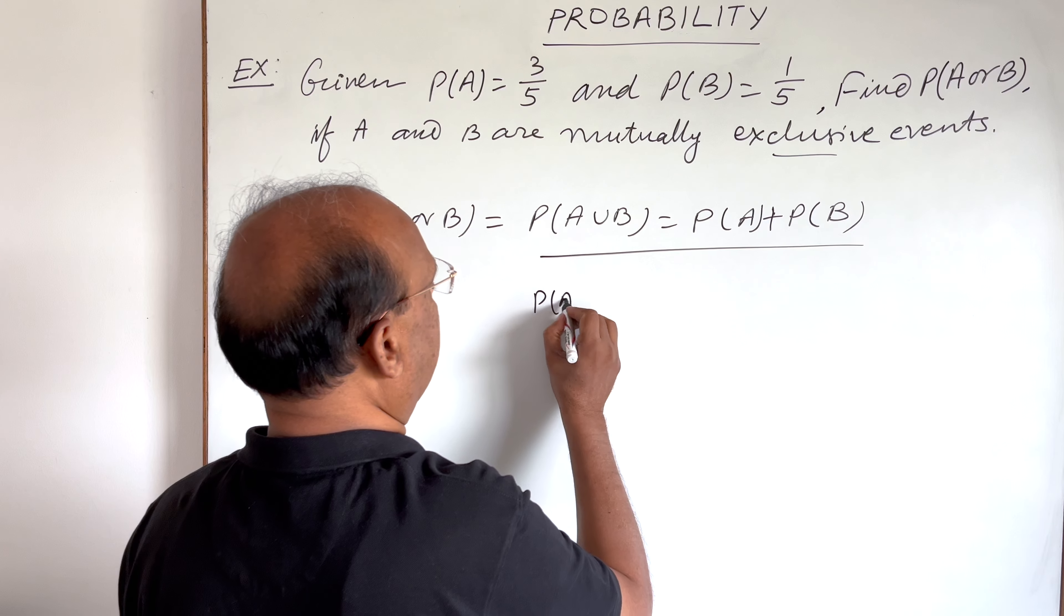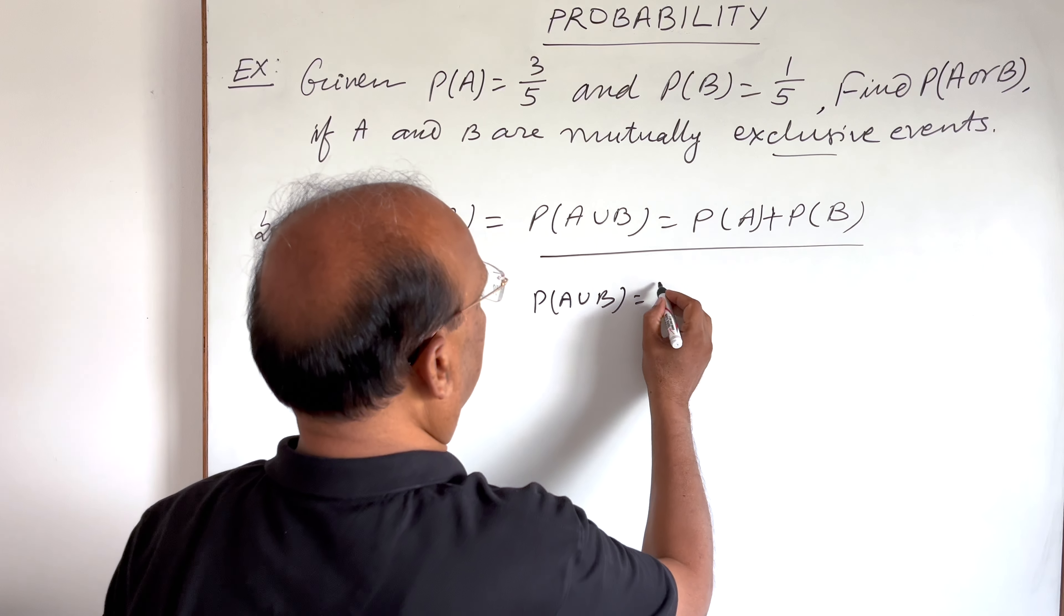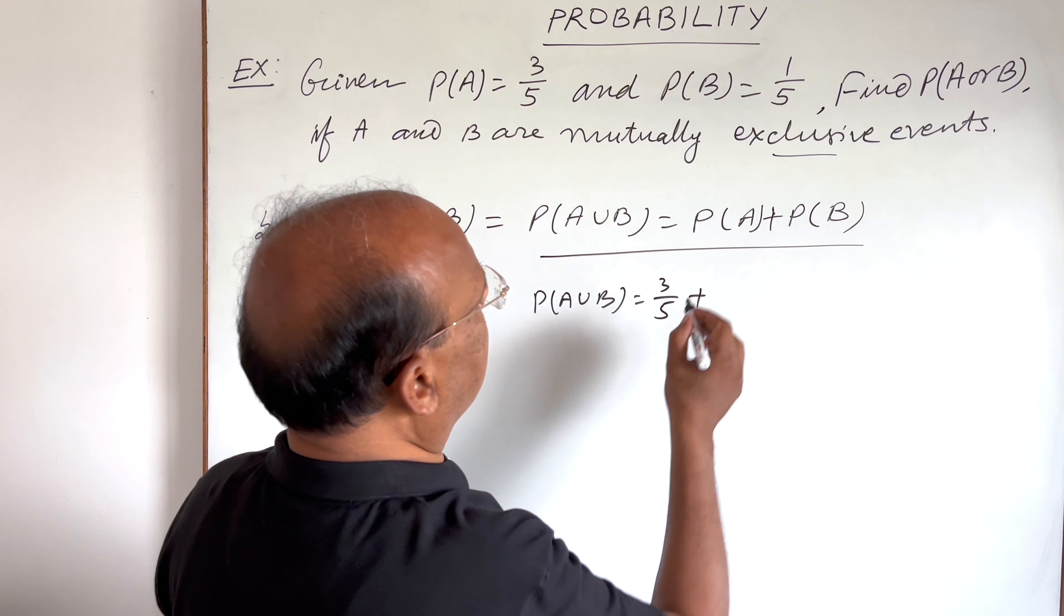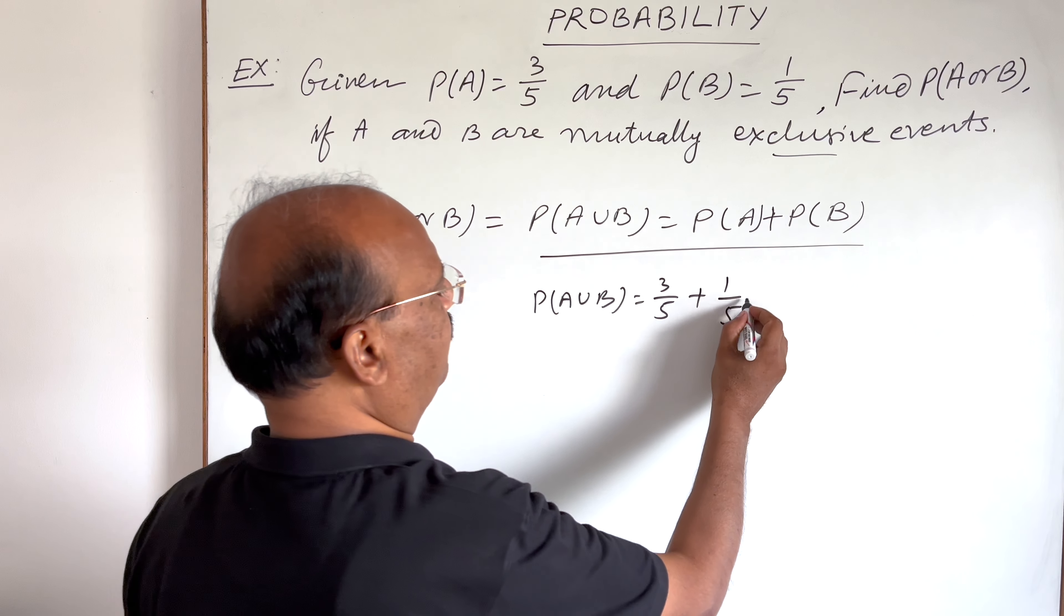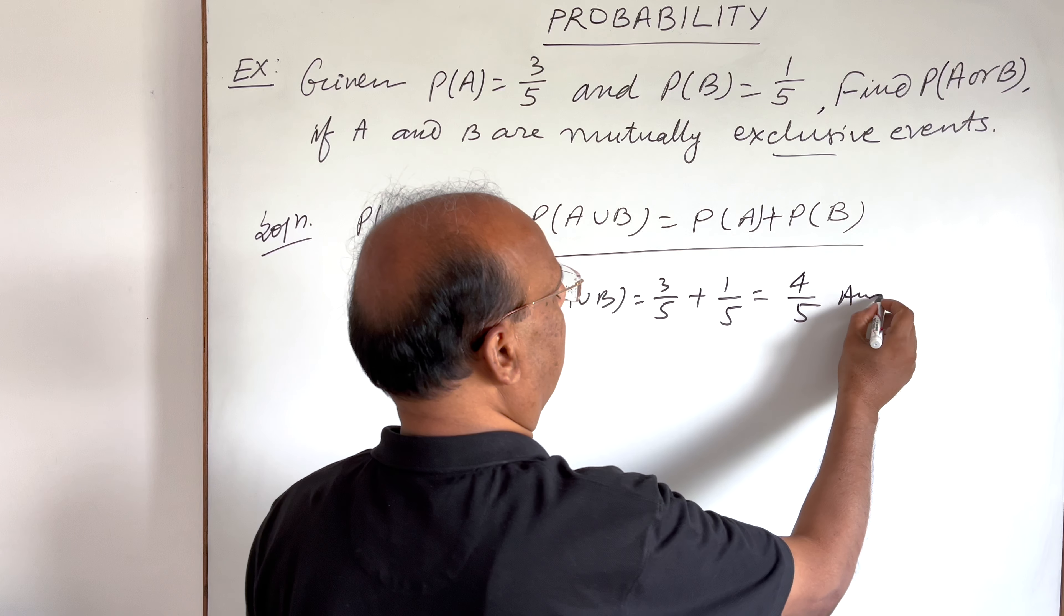Probability of A union B is equal to P(A) which is 3 by 5, and P(B) is 1 by 5. Simplify it, this will be 4 by 5. So this is the answer.